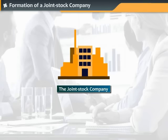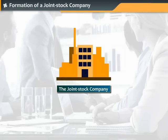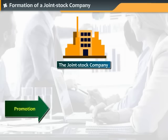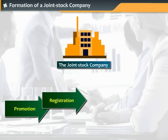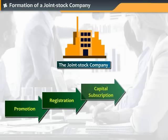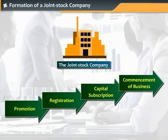Formation of a Joint Stock Company includes four important stages, namely Promotion, Registration or Incorporation, Capital Subscription, and Commencement of Business. Let us learn more about each of these stages in detail.